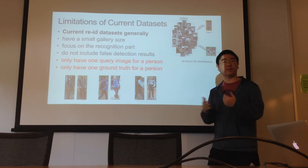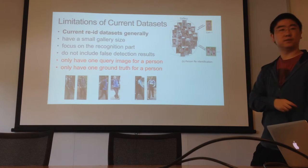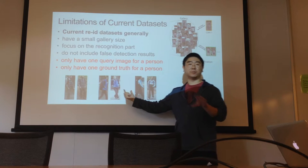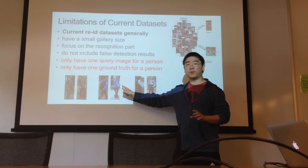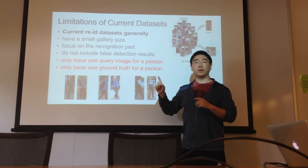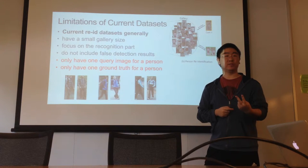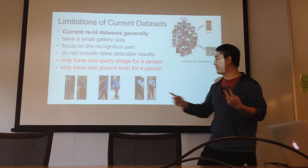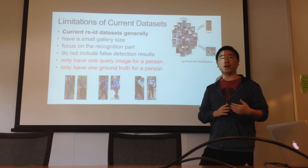If we have multiple ground truths, we can design some re-ranking methods. That is the fourth limitation. To clarify: one person only has two images — one is the query and the other is in the database. You only have one query bounding box and want to search for that specific bounding box. This applies to both training and testing. For training, you have two images of one person. During testing, you also have two images for this person — one is the query and one is in the database.